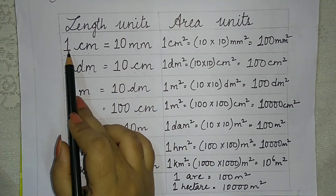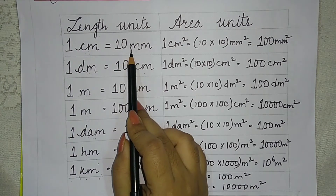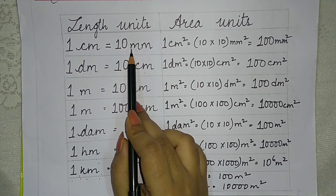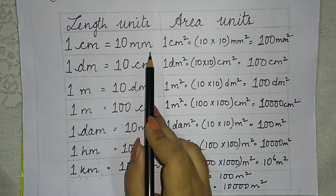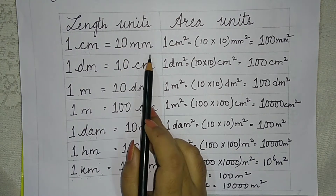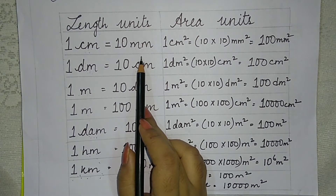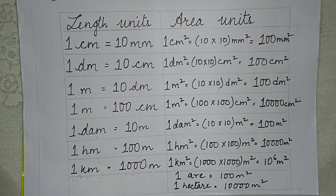Now you may ask how 1 centimeter equals 10 millimeters. For meter, liter, or grams, I explained these conversions in my metrics and measurement video. I will put a link in the description — you can see that video for a good explanation.